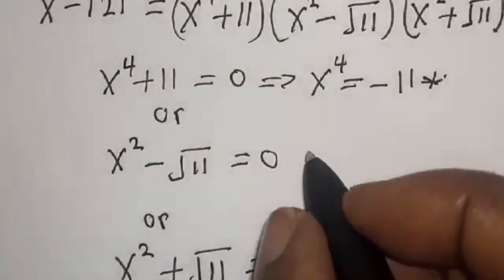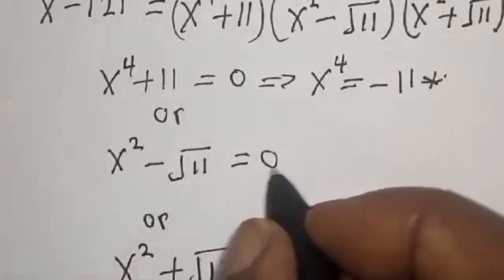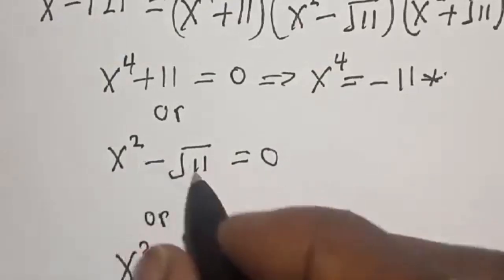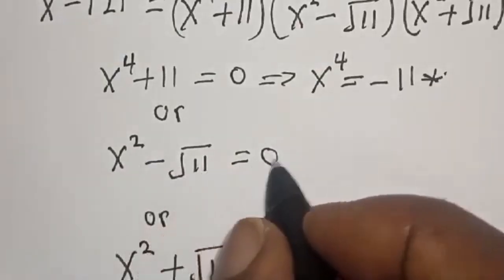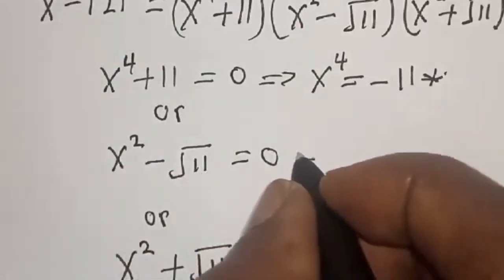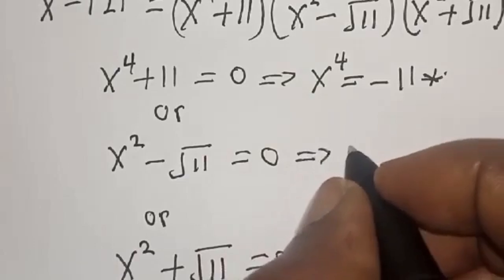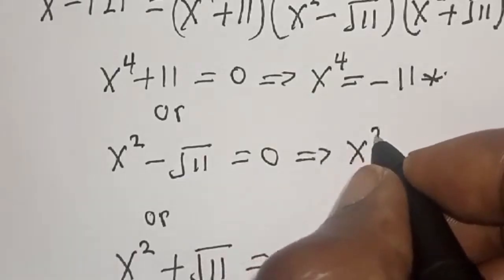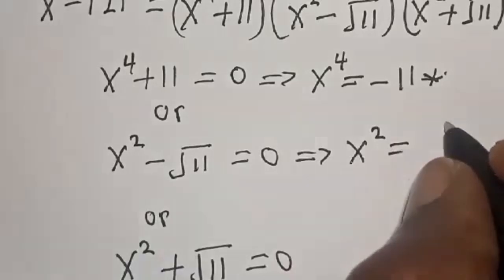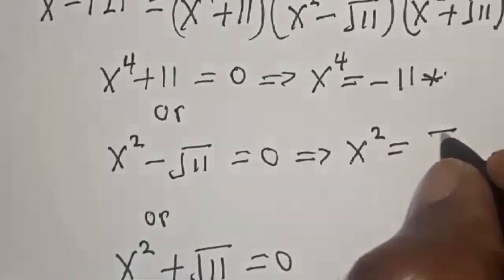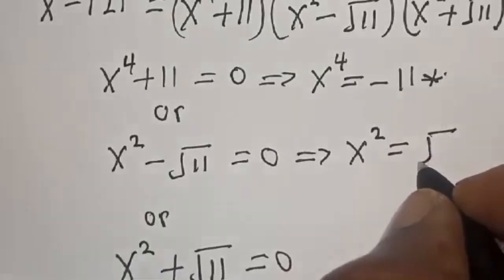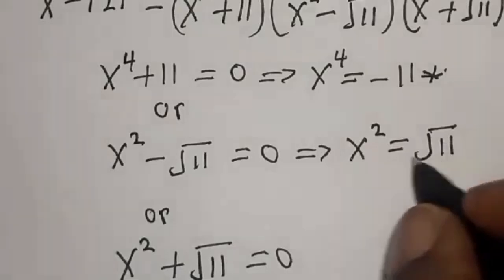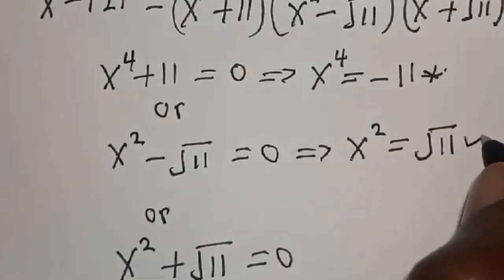Also from here, s squared minus square root of 11 is equal to 0. This implies that s squared is equal to square root of 11. Now this is positive. We accept this.